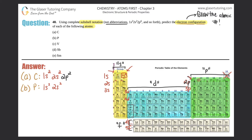You need to get to 15, so you collect all six of the 2p boxes: 2p6. Now you're at number 11 — that's 3s — collect both boxes: 3s2. Number 13 is 3p, but you only need three more boxes to reach 15, so that's 3p3. Phosphorus: 1s2 2s2 2p6 3s2 3p3.